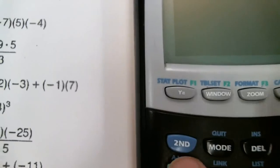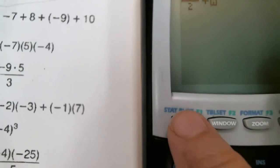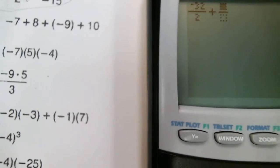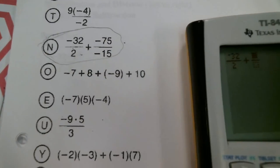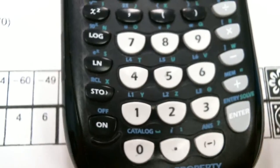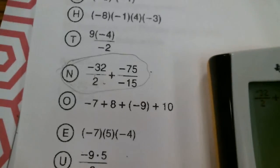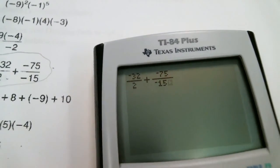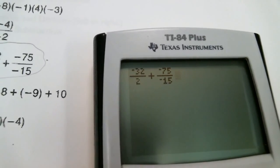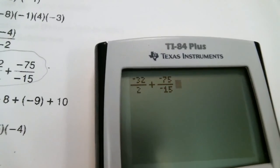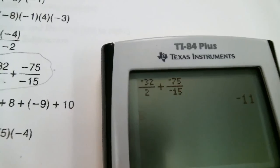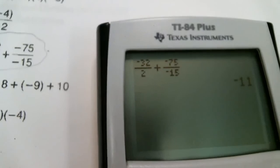Now let's enter our next fraction: press alpha and y-equals, then enter. Now enter the second fraction — negative 75. Make sure you press the negative key first, then 75. Move down and enter negative 15. Your calculator should look like that. Move outside and always make sure you have the flashing black box before you press enter. Press enter — there's your answer: negative 11.